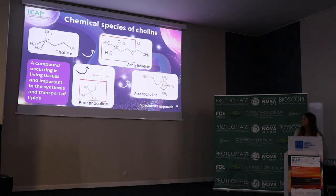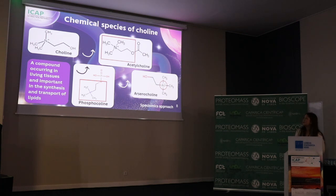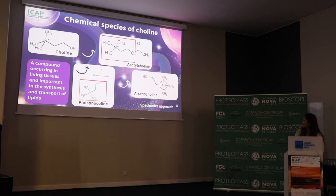Here is a good example of the speciomics approach using choline, a compound occurring in living tissues and important in the synthesis and transport of lipids. I have three different chemical species of choline: acetylcholine, phosphocholine, and arsenocholine — where arsenic replaces the nitrogen at the center of the molecule. This is a good example of a speciomics approach.